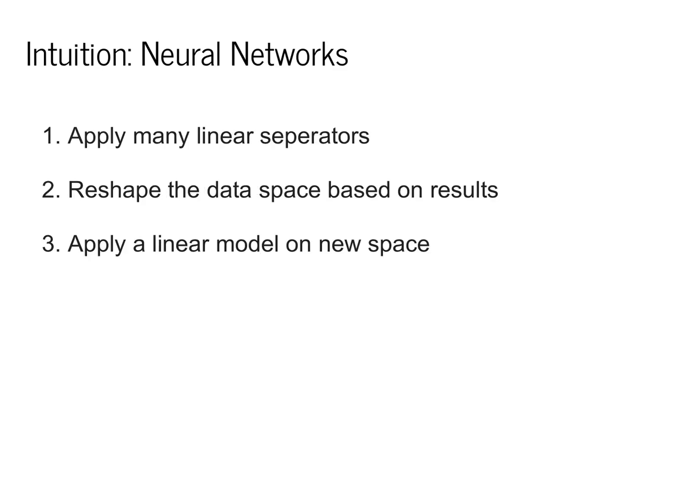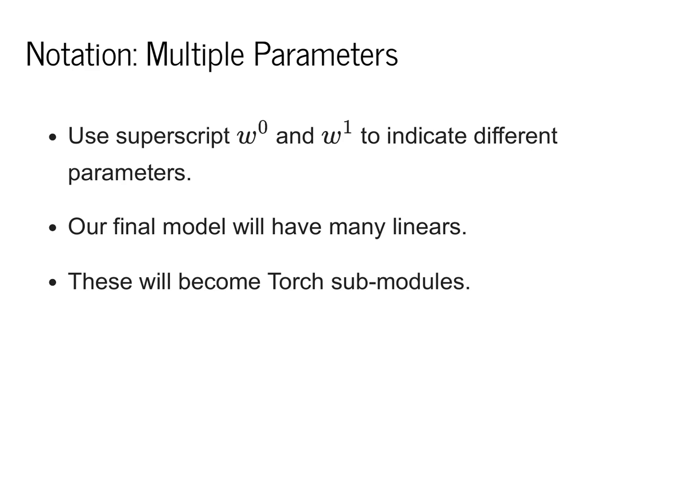Here's the intuition for neural networks. We're going to apply several different linear separators. We're then going to use these linear separators to reshape the data points based on their results. Once we do that, we'll just apply a simple linear model on the new space to make our classification. To do this, we're going to need a little bit of new notation.